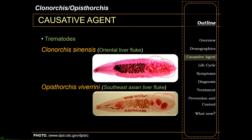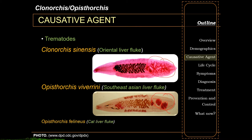There is another species called Opisthorchis felineus, or the cat liver fluke, but we will not discuss that in much detail.